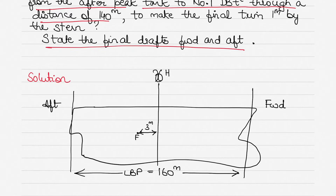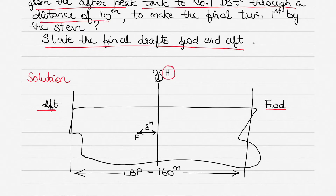So I have drawn the ship here — it's the starboard aspect of the vessel with the forward part here and aft aspect there. The midship is denoted by the letter H. The length between perpendiculars given in the question is 166 meters — this is the length between the forward and aft perpendiculars. So from the aft perpendicular to midship, each distance is 83 meters, which is half of 166.